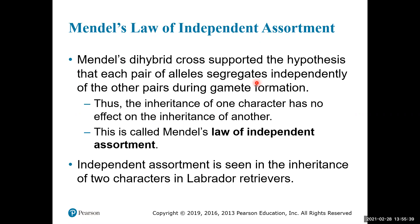What the dihybrid cross shows is that each pair of alleles — each character — will segregate independently from one another in gamete formation. This is analogous to how homologous chromosomes can line up independently along the metaphase plate during meiosis. Those alleles can independently assort regardless of what allele is being passed on for the other character — just because the round allele is passed on doesn't mean the yellow allele has to go with it.